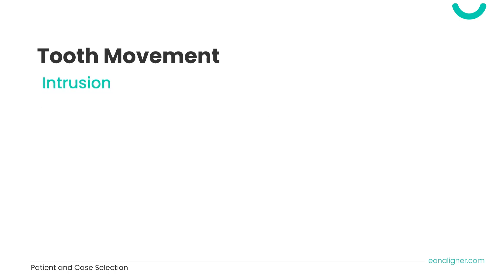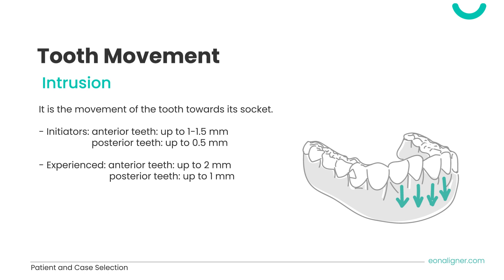Intrusion is the movement of the tooth towards its socket. Initiators can perform intrusion in anterior teeth up to 1 to 1.5 millimeters and posterior teeth up to 0.5 millimeters. Experienced doctors may intrude anterior teeth up to 2 millimeters and posterior teeth up to 1 millimeter. Attachments are not needed on teeth being intruded but are needed on adjacent teeth. Intrusion also requires space, as teeth are wider in the incisal or occlusal part.